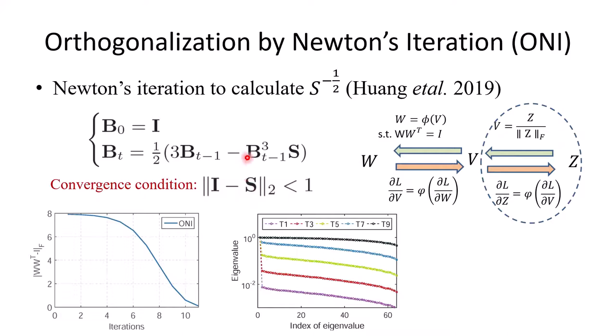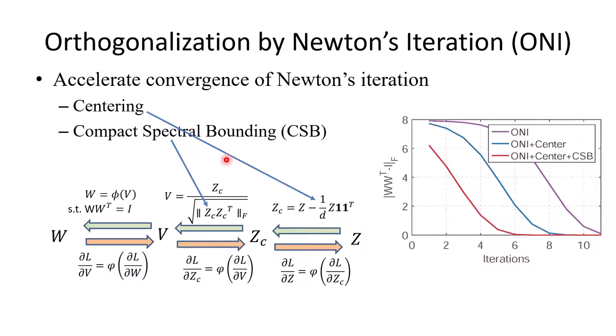To alleviate the problems, we use Newton's iteration to calculate the orthogonal transformation. One convergence condition of Newton's iteration is that the matrix S should be norm-bounded. We use the reparameterization idea again to bound the spectrum of V. By doing this, we can find the Newton's iteration can converge as well. To further improve convergence, we explore the reparameterization idea again to center another proxy matrix and provide more compact spectral bounding. We can see that with these two methods, the Newton's iteration convergence is significantly faster.